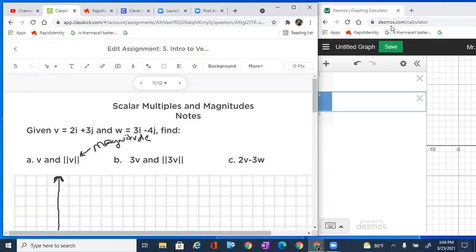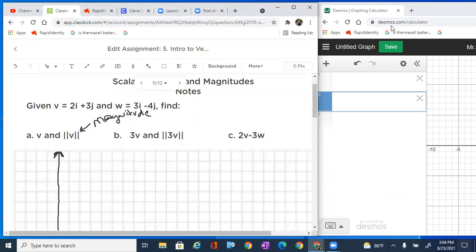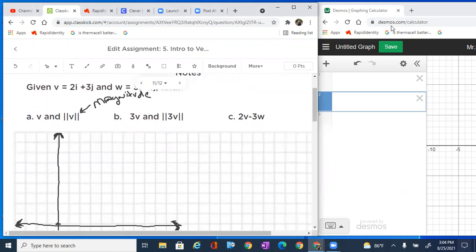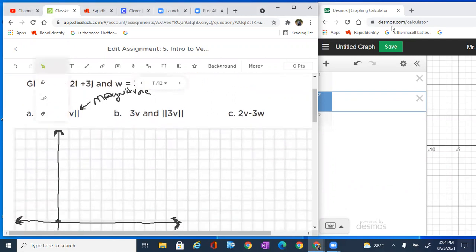So let's go here. It says v. Go ahead and find v, which we already know is 2i and 3j. And we've been doing this for a little bit. So we should be able to graph that as a position vector and say, well, we know that the horizontal is 2 and the vertical is 3.